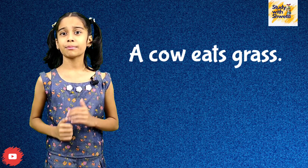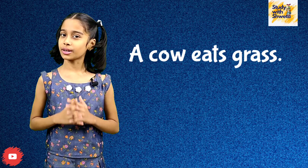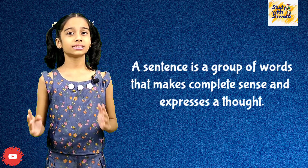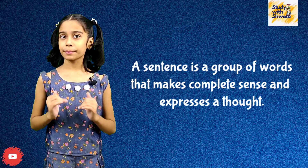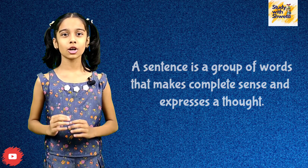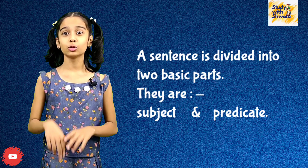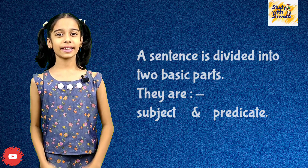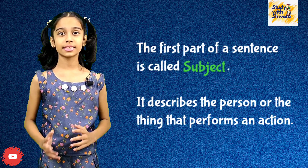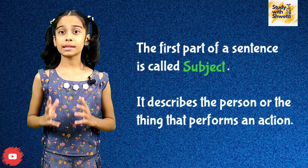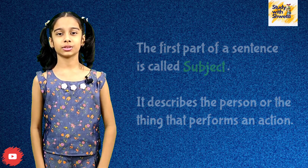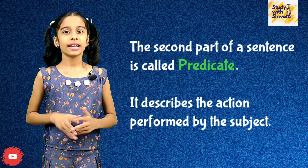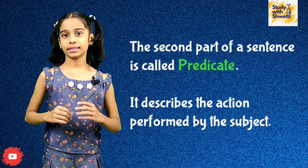Now these words make complete sense and they form what is called a sentence. So from this we can say that a sentence is a group of words that makes complete sense and expresses a thought. A sentence is divided into two basic parts: subject and predicate. The first part is called subject — it describes a person or thing that performs an action. The second part is called predicate — it describes the action performed by the subject.